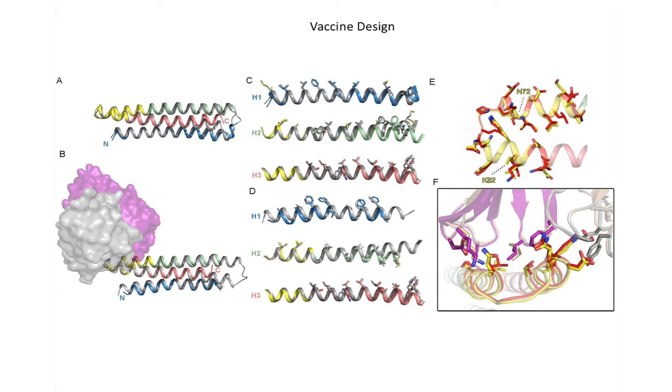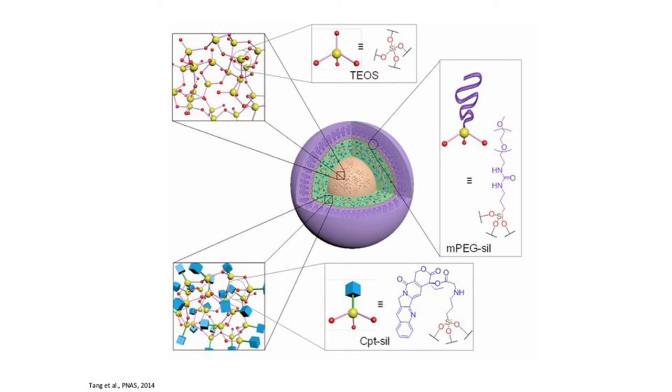Bruno will utilize cutting-edge protein engineering approaches to design next-generation vaccines, whereas Li will focus his research on the development of smart nanomaterials for treating cancer.